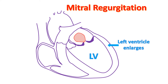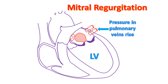When the left ventricle fails, the pressure in the chamber when it relaxes increases and is transmitted back to the left atrium. Increase in left atrial pressure is in turn passed on to the pulmonary veins which bring oxygenated blood from the lungs to the left atrium. When the pressure in the pulmonary veins goes above 25 mmHg, fluid starts collecting in the small air cavities of the lungs known as alveoli. This causes breathlessness and decrease in oxygen levels in the blood, as it interferes with oxygenation of blood in the lungs. This situation occurs in heart failure and is known as pulmonary edema.